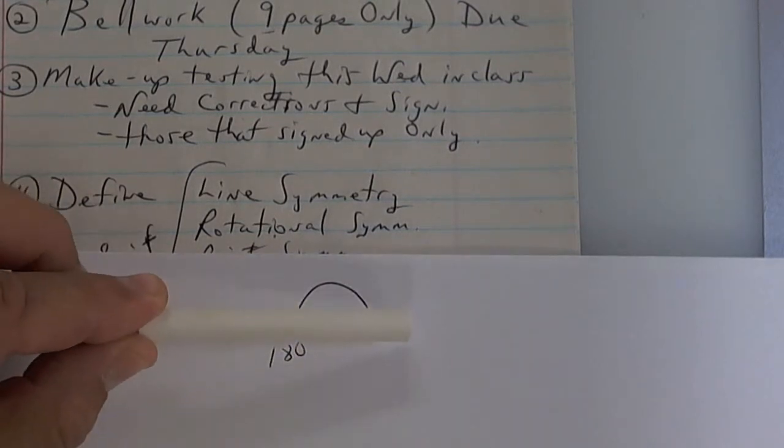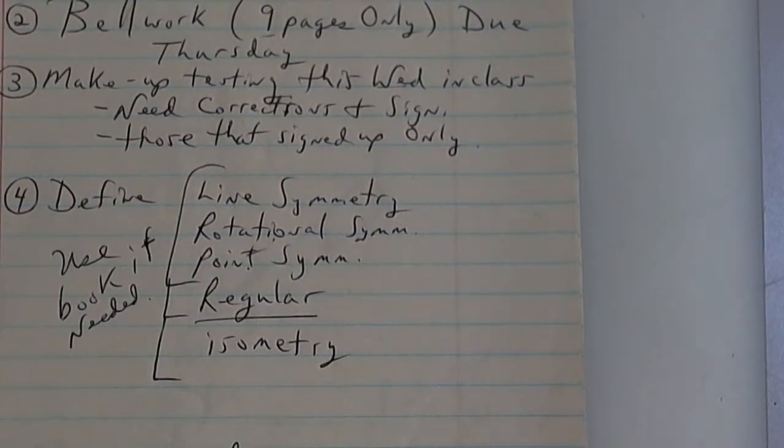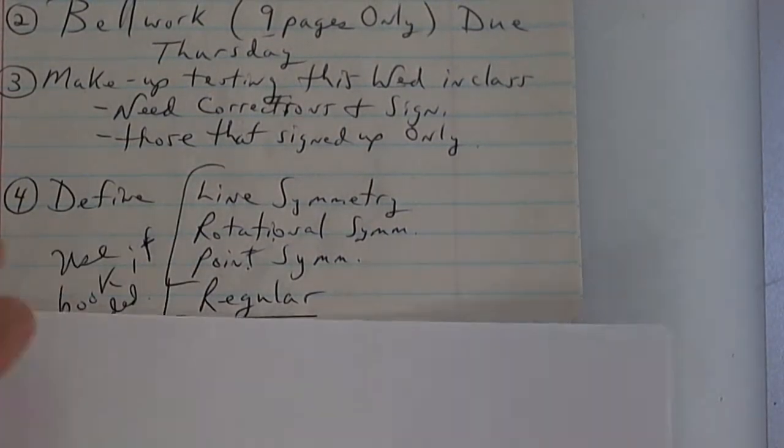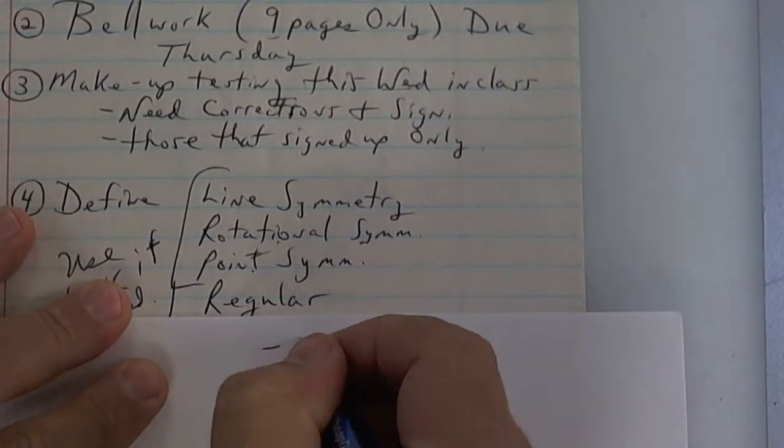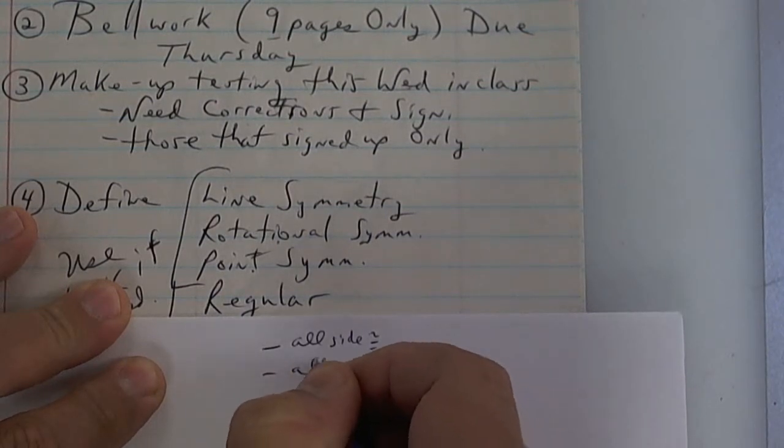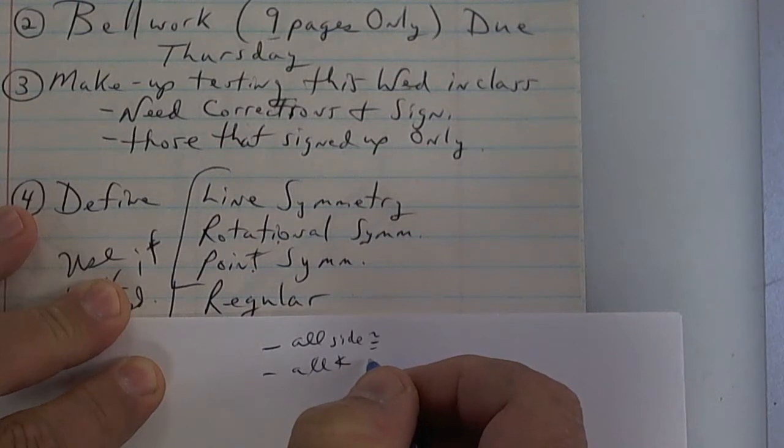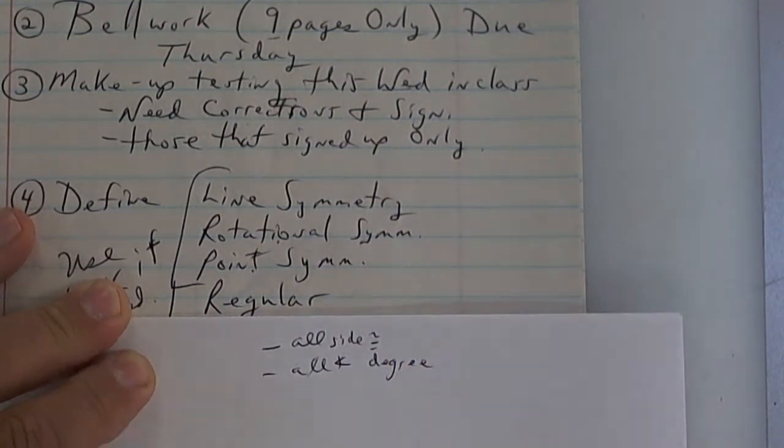So this would be point symmetry, which is also rotational symmetry. It's a special rotational symmetry. Regular has two meanings: all the sides are equal and all the angles are equal, same degree. Two things.